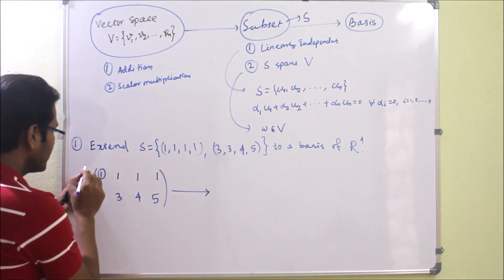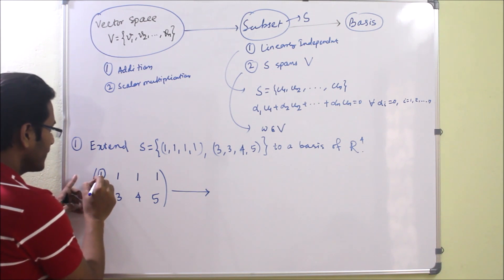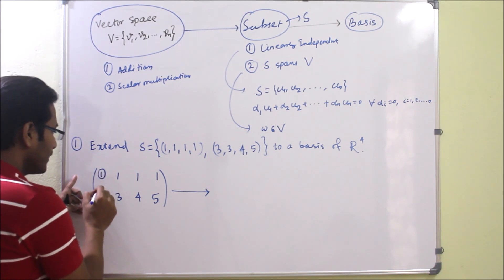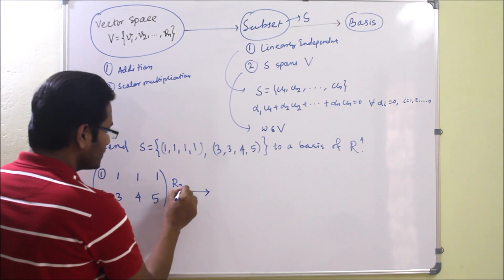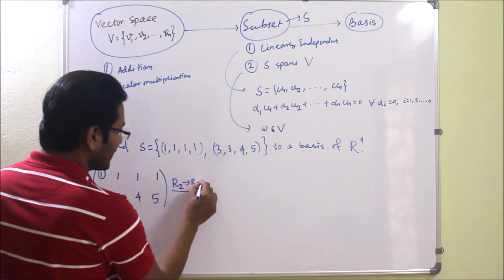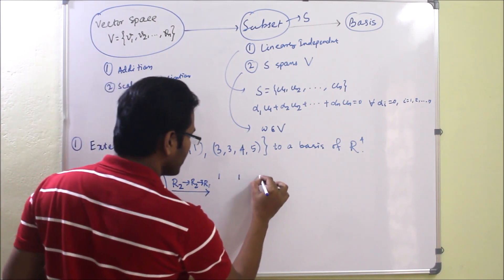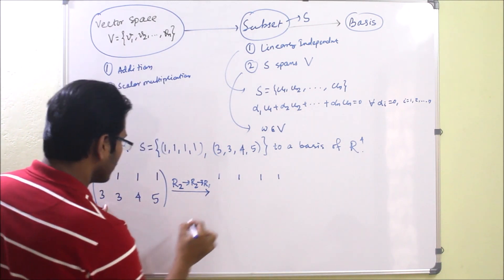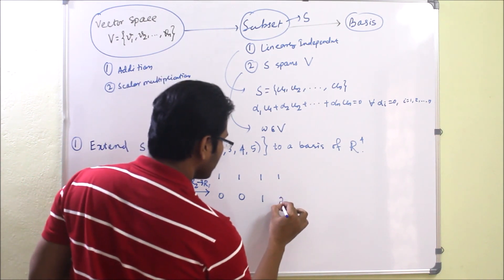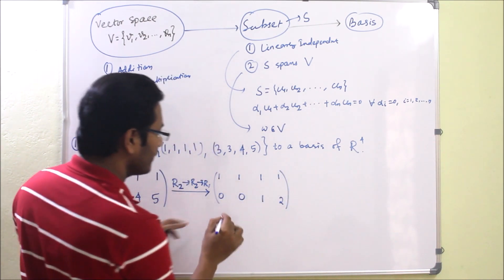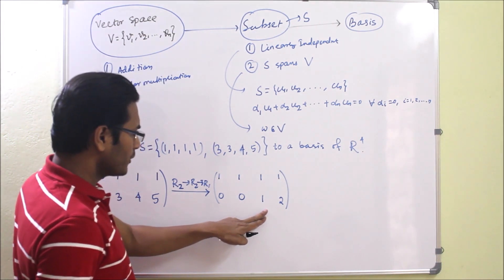The pivot element is the first leading non-zero element of the row. The first pivot element is 1, and below it we have to make the entry 0. We change R2 as R2 minus 3R1. The first row stays as (1, 1, 1, 1), and the second row becomes (0, 0, 1, 2). This is now in row echelon form.